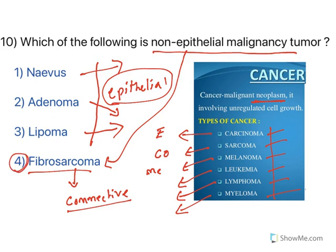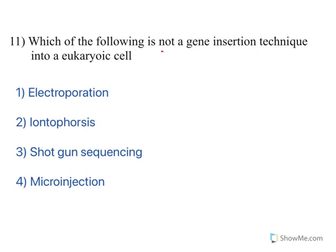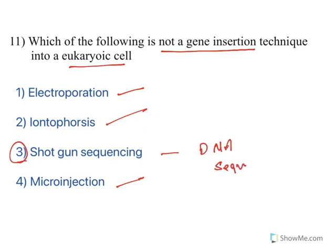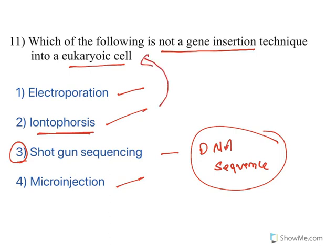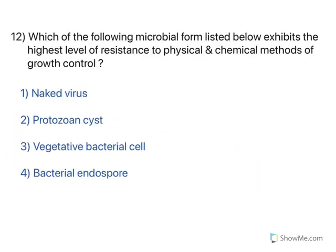Which of the following is NOT a gene insertion technique in eukaryotic cells? Gene insertion methods include transduction, conjugation, electroporation, iontophoresis, and microinjection. Shotgun sequencing is a method of DNA sequencing, not gene insertion. Although NTA gave iontophoresis as the answer, ionic currents can introduce genes into eukaryotic cells, so there may be a key change from NTA. The correct answer is shotgun sequencing.